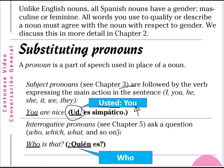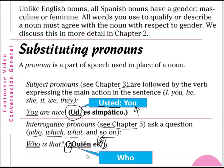Interrogative pronouns — we will see them in chapter 5 when you ask a question about who, which, what, and so on. For example, 'who is that?' — ¿Quién es? That means who is that, or who is it, or who are you. In an interrogative sentence, you have a question mark at the end and also a reverse question mark at the beginning of the sentence.